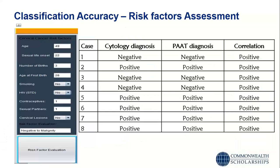We have done rigorous tests on the platform. For the risk factors assessment, the platform asks patients questions such as: How old are you? When did you start having sex? How many kids do you have? What was the age at first birth? Do you smoke? Do you have HIV? These questions help predict the chances of cervical cancer. With our platform, we have automated this workflow and received 100% correlation on test cases validated with experts.